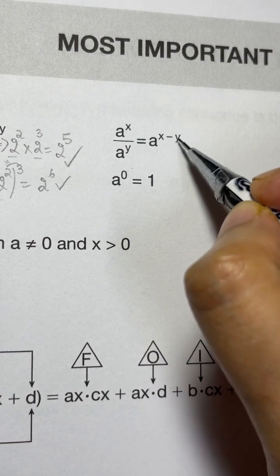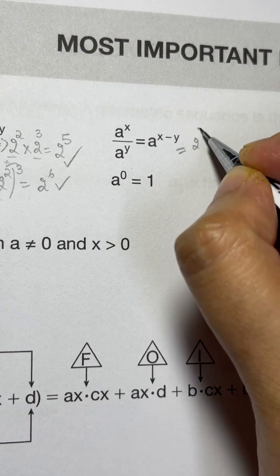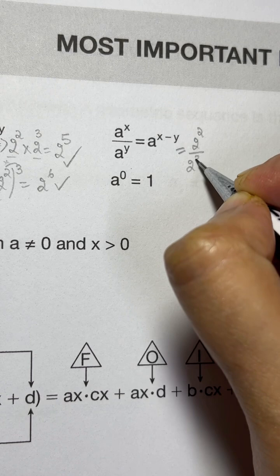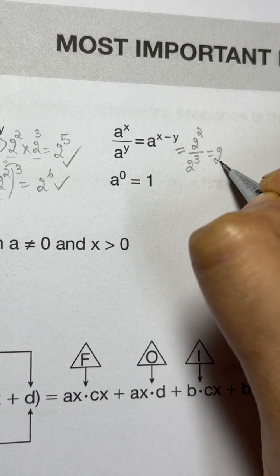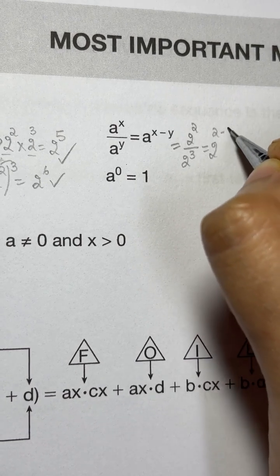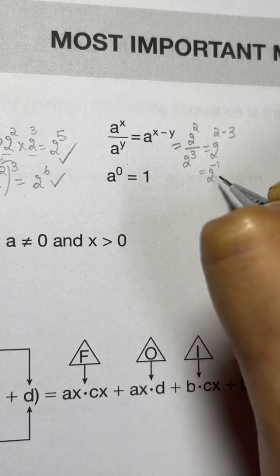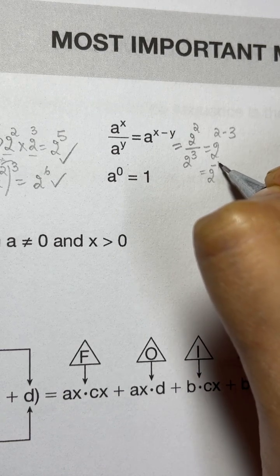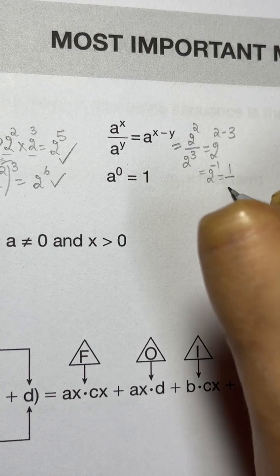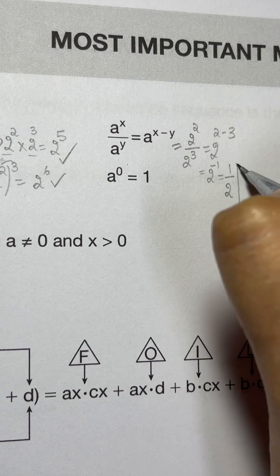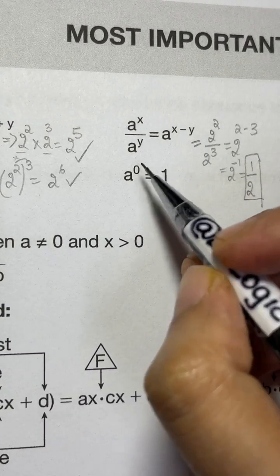When you have the same bases and there is division between them, you subtract the powers. For example, two to the power of two over two to the power of three — same base, division — you subtract: two to the power of two minus three, which equals two to the power of negative one. A negative exponent means you take the reciprocal: one over two.